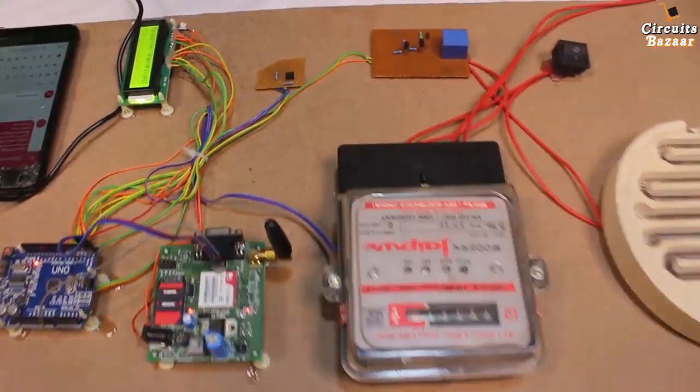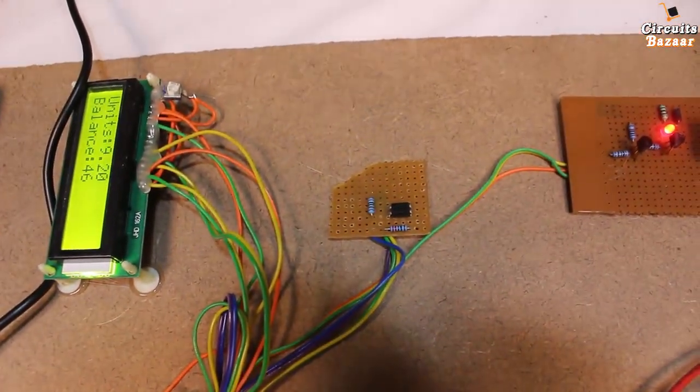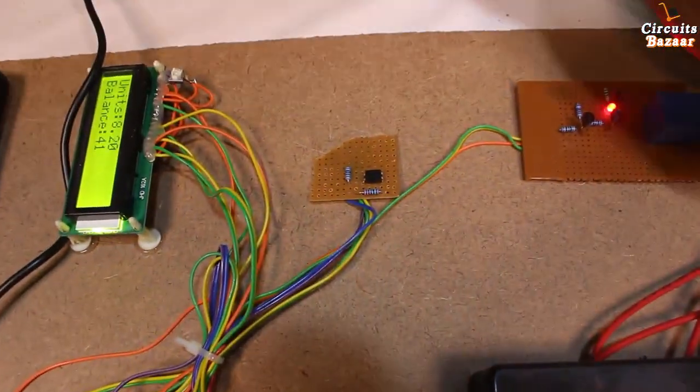Now message on the LCD right now is low balance. Now message got, energy meter recharge with the amount 45, and relay is on. And I got the message, balance recharge 45.